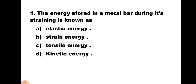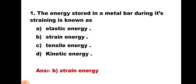Question number 1: The energy stored in a metal bar during its straining is known as — A. Elastic energy, B. Strain energy, C. Tensile energy, and D. Kinetic energy. Whenever a load is applied to a body, it deforms, a strain is induced, and whatever energy is stored is known as strain energy. Hence, the correct answer is B. Strain energy.